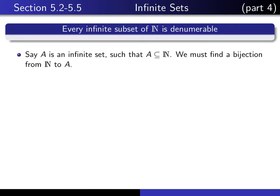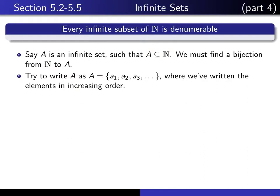So let's say we have an infinite subset of the natural numbers, and we're going to try to prove that it is denumerable, so that means we have to find a bijection from ℕ into A. Let's begin by writing the elements of A in increasing order, assuming that it's possible for us to do that.